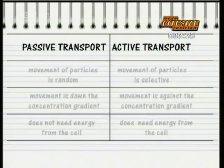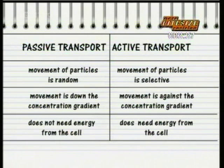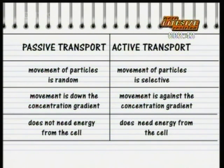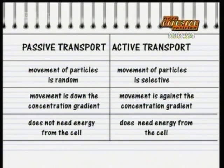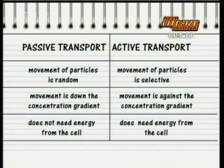You might have something like this. In passive transport, the movement of particles is random, while in active transport the movement of particles is selective. In passive transport, the movement is down the concentration gradient, while in active transport it's against the concentration gradient. Passive transport does not need energy from the cell, while active transport does need energy input from the cell.